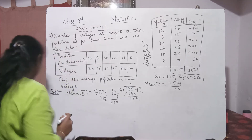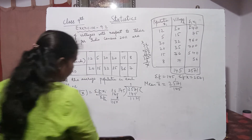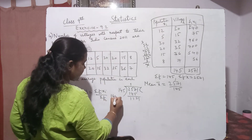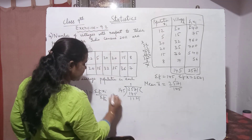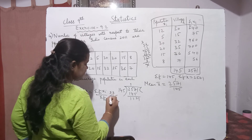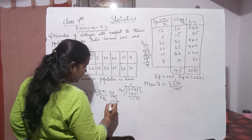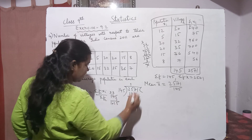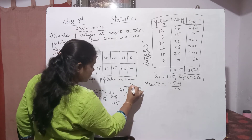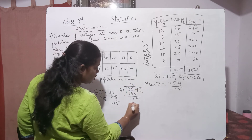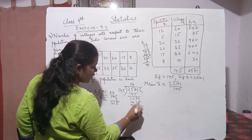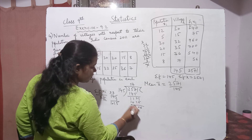145 × 7 = 1015. Subtracting: 1121 − 1015 = 106. Bring down a zero after the decimal point. 1060 ÷ 145 goes 7 times again: 145 × 7 = 1015. 1060 − 1015 = 45.